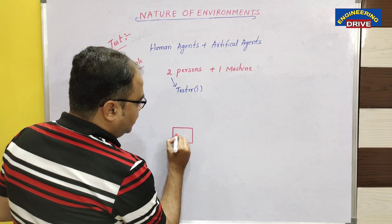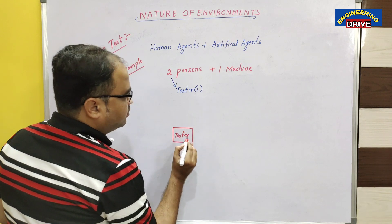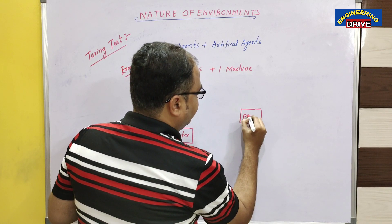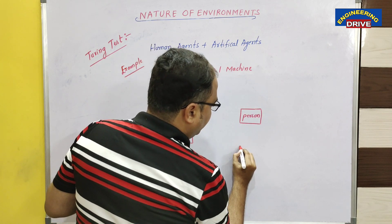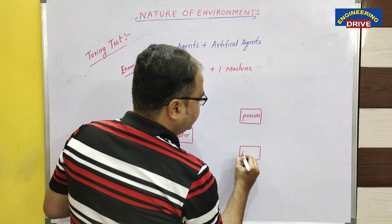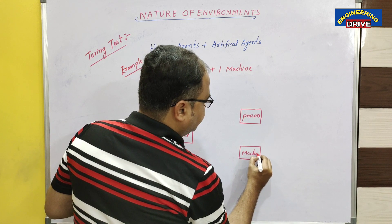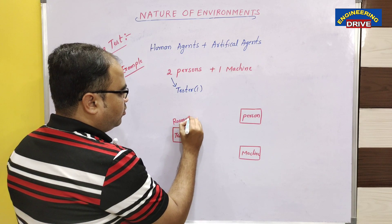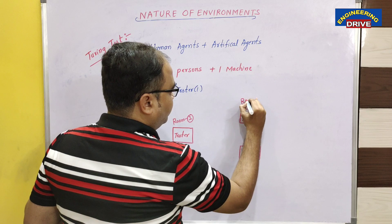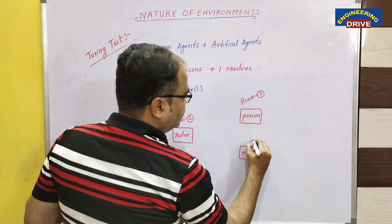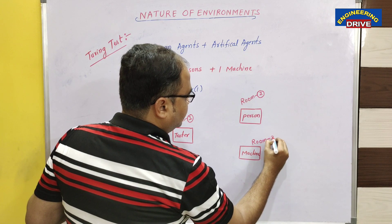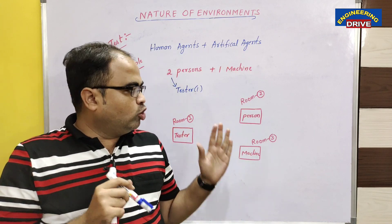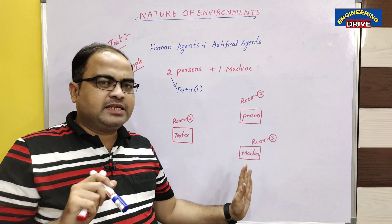For example, the tester will be available in one room, the human agent in a second room, and the machine in a third room. So these three entities are in three different rooms — room number 1, room number 2, and room number 3. They are at three different places, not knowing which room they are in, but they have been placed in separate rooms.